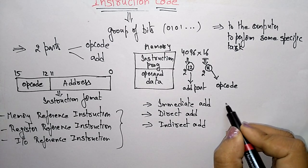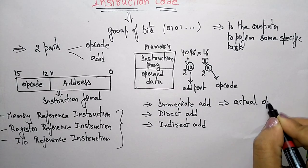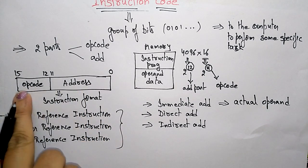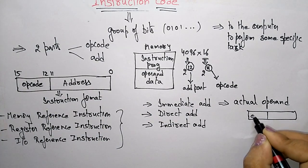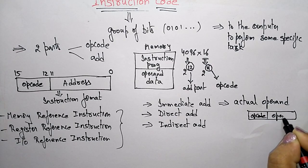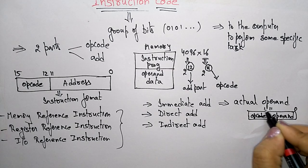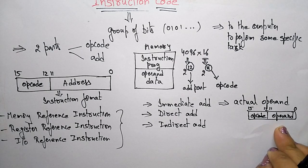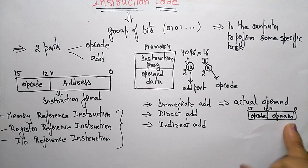Immediate addressing means it specifies the actual operand. The actual operand will be present directly in the instruction. So in bits 0 to 11 you have the direct operand, and bits 12 to 15 hold the op code. This is the immediate address format — the processor understands this is an immediate address, gets the operand, and calculates the operation.